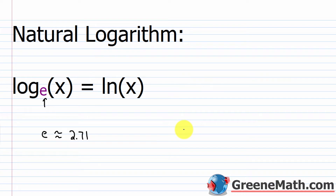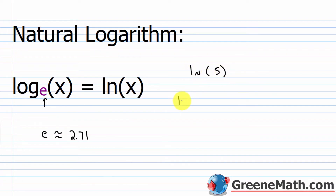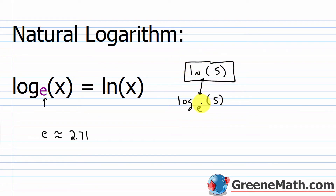So when we see log base e of x, we can abbreviate this and just say this is the same as ln of x, which stands for the natural logarithm of x. So if I see ln of 5, this is the same as log with a base of e of 5. These two are the same, but typically you're going to see ln written rather than log base e.